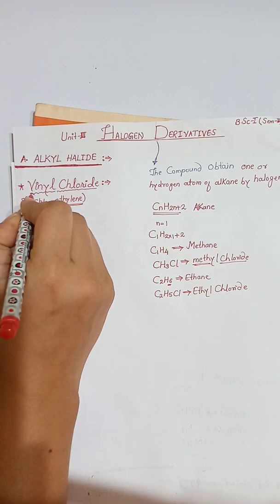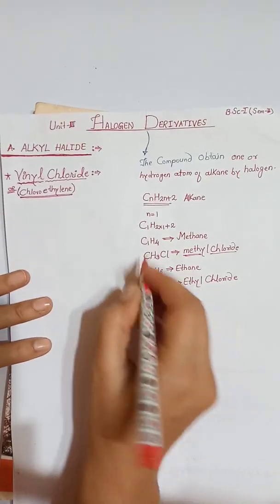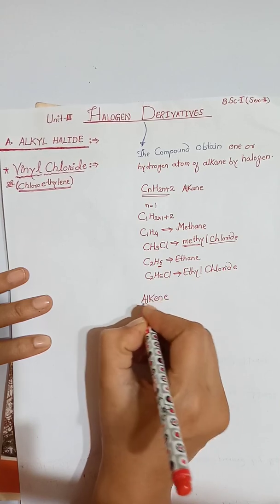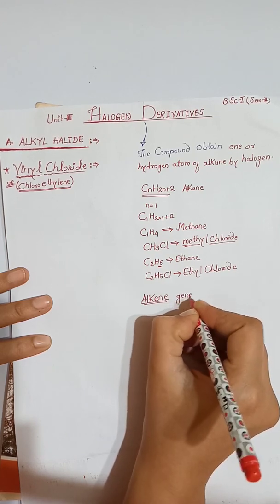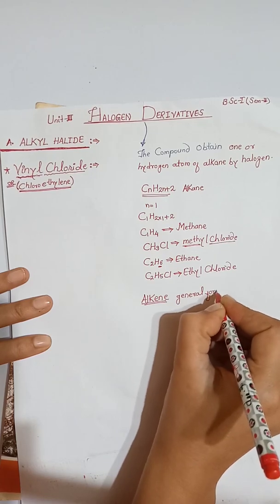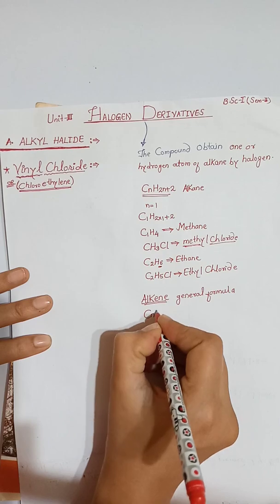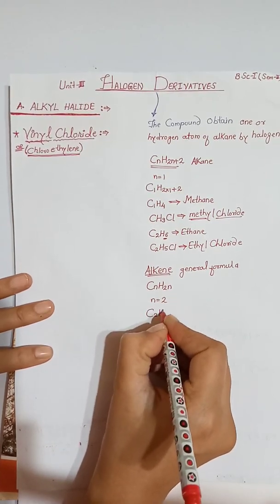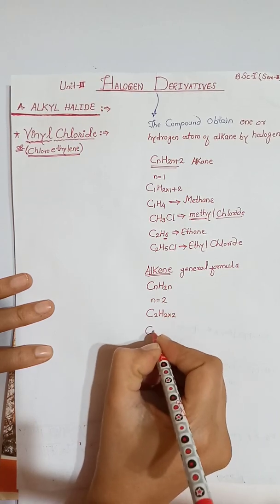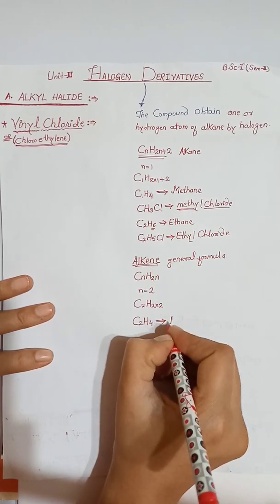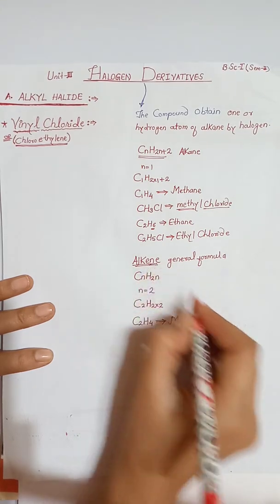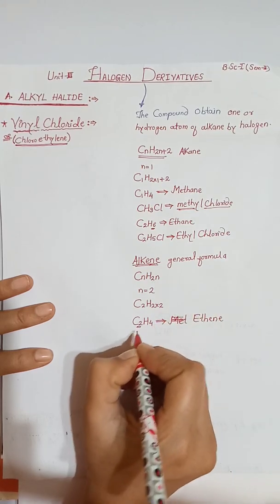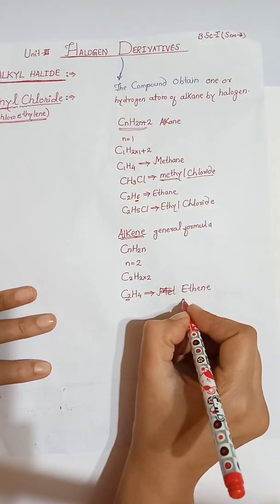Today's topic is vinyl chloride. Now, if we have an alkene, the general formula of alkene is CₙH₂ₙ. If n = 2, we get C₂H₄. This compound is ethene, not methane — because n is 2 here. This is also known as ethylene.